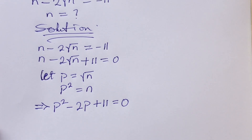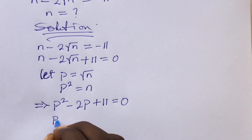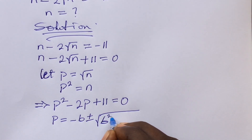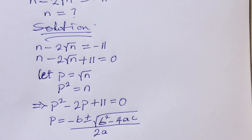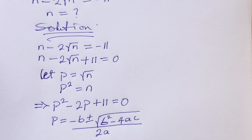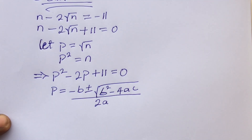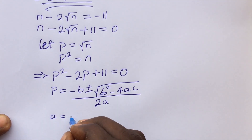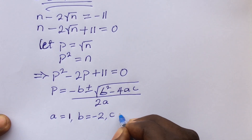Looking at this equation carefully, it is a quadratic equation. We cannot use the factorization method, so we'll use the quadratic formula. The formula states: p equals minus b plus or minus the square root of b squared minus 4ac, all over 2a. From our equation, a equals 1 (coefficient of p squared), b equals minus 2 (coefficient of p), and c equals 11 (the constant).